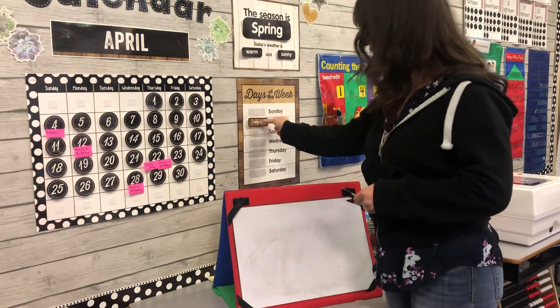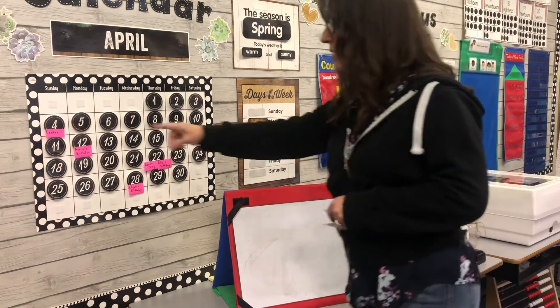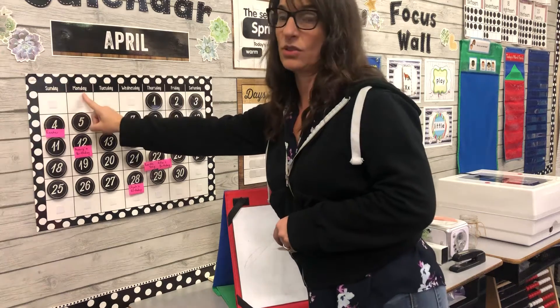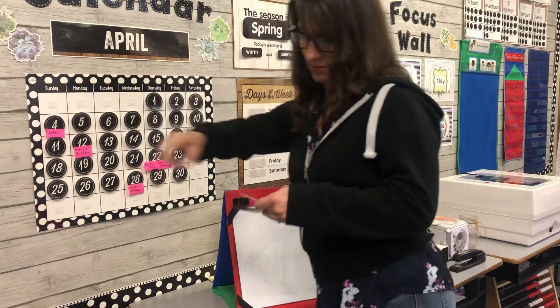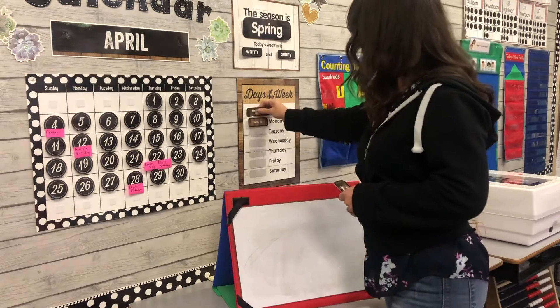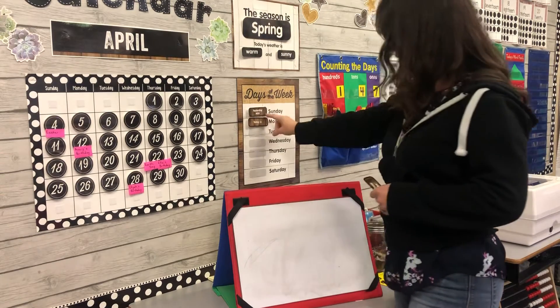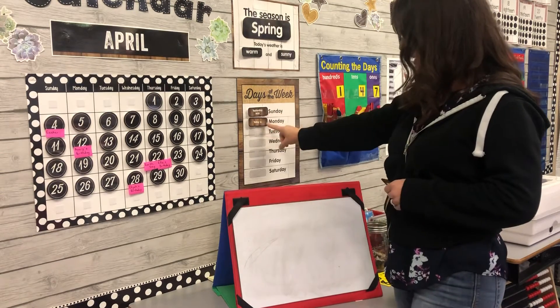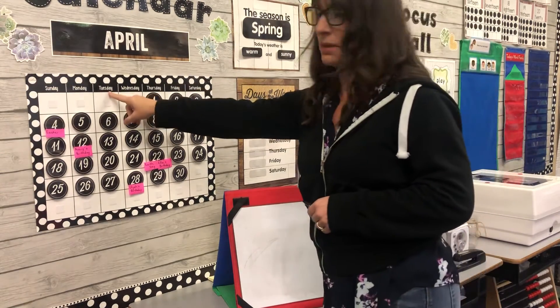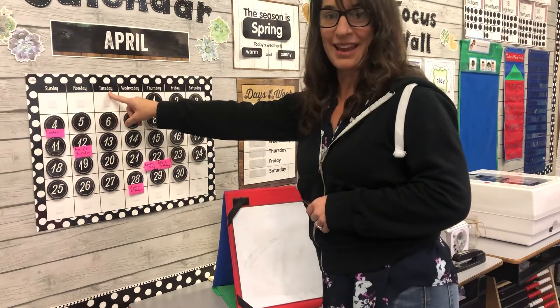Today's day of the week is Monday. If today is Monday, what was yesterday? You just look backwards one day — yesterday was Sunday. Today is Monday and tomorrow will be Tuesday.